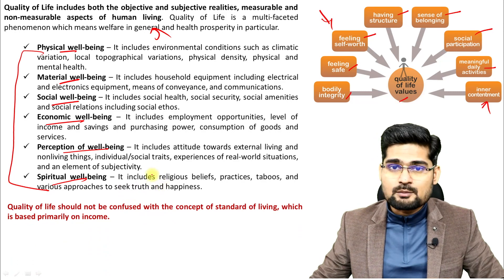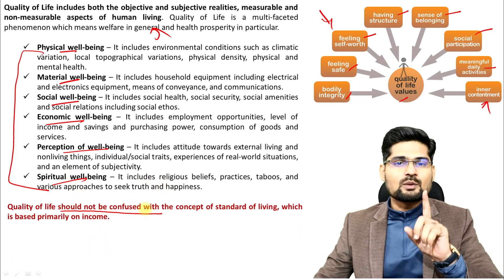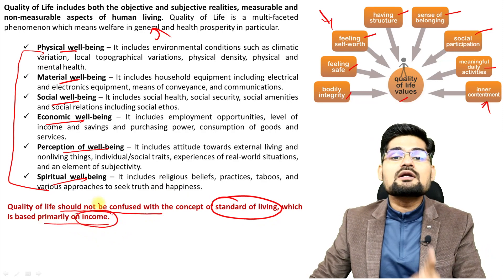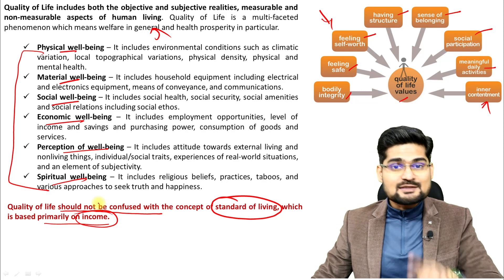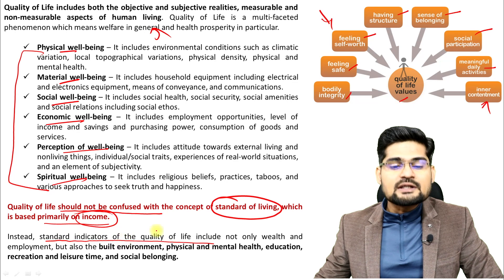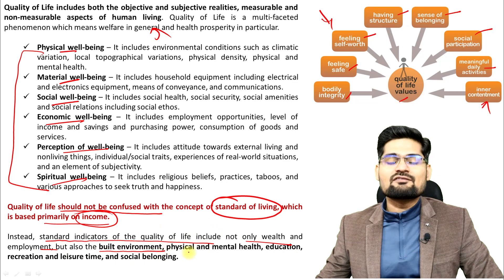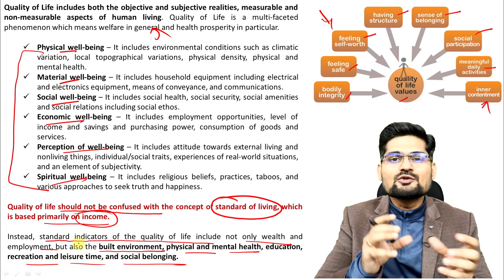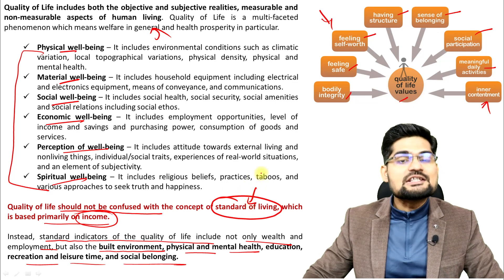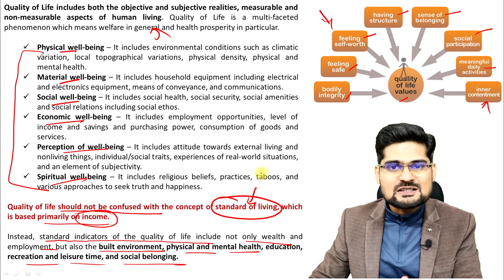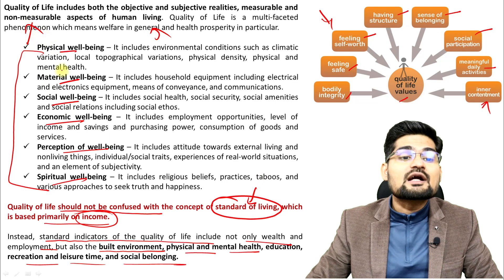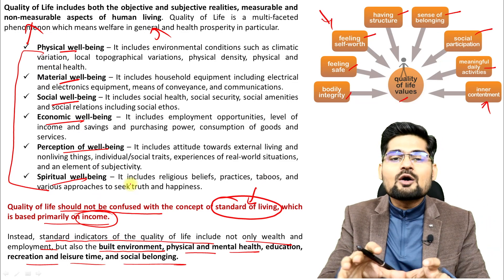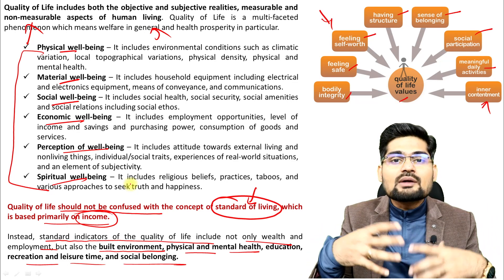It is important not to confuse quality of life with standard of living, which is primarily income-based. Standard of living does not represent quality of life in direct ways. Standard indicators of quality of life include not only wealth and employment but also built environment, physical and mental health, education, recreation, leisure time, and social belongingness. Wealth is just one aspect — it does not completely determine social well-being and quality of life. Social well-being and quality of life are intertwined and integrated together in the same human system.